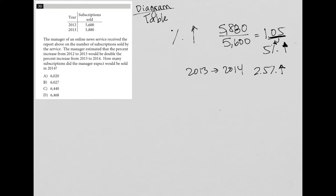How many subscriptions did the manager expect would be sold in 2014? So if we're at 5,880 for 2013, and I want to figure out what that is plus 2.5%, right? So this represents my 2.5% increase. And if you don't understand where the decimal comes from, the 2.5% as a decimal, you move the decimal to the left twice, so that becomes 0.025.